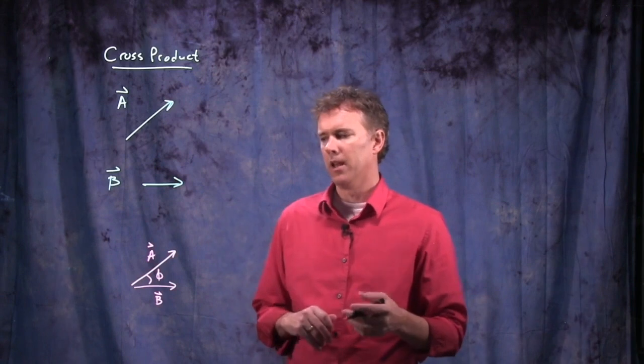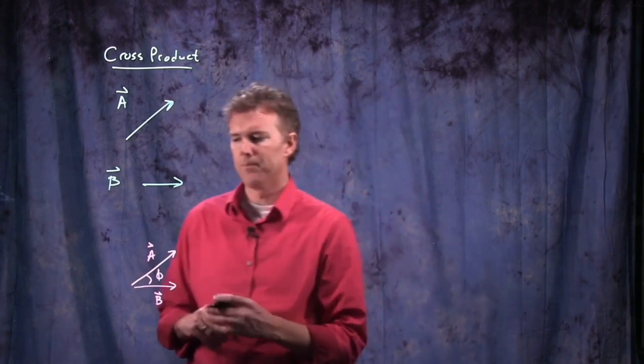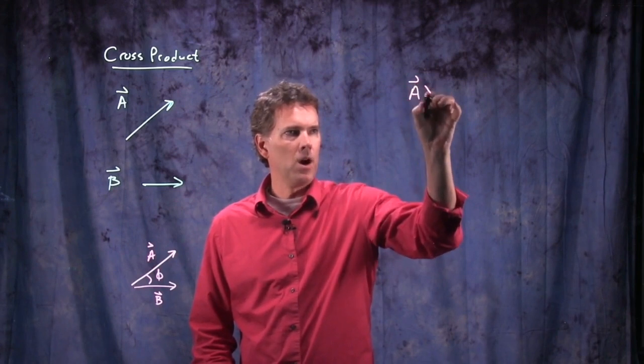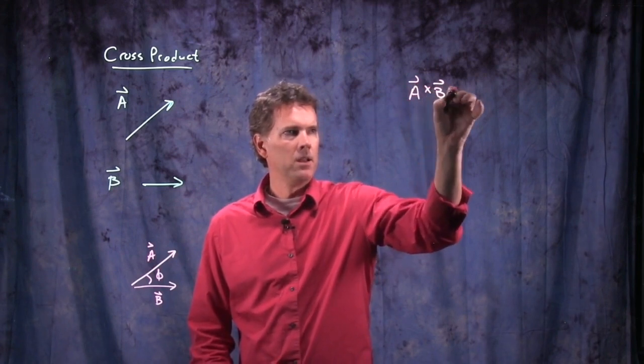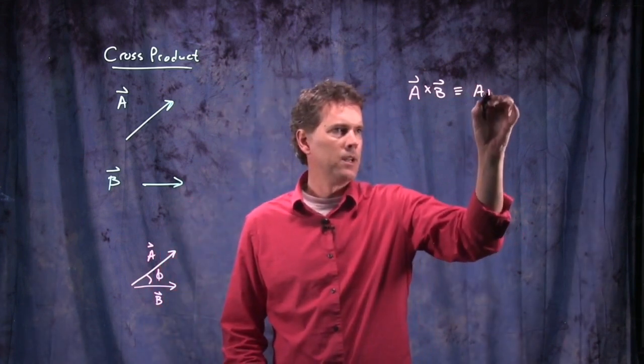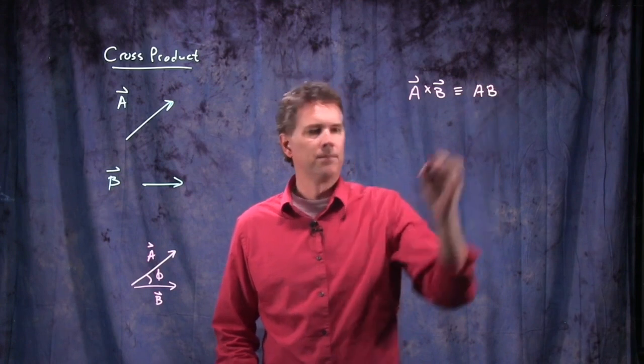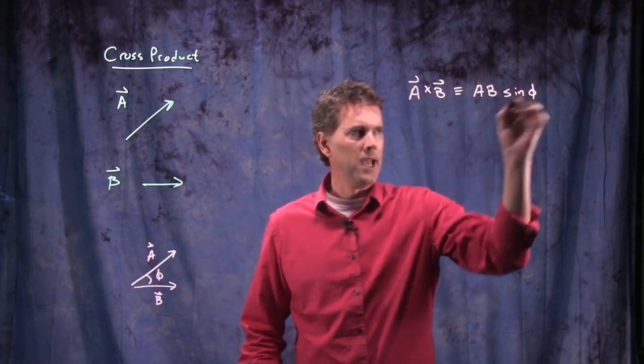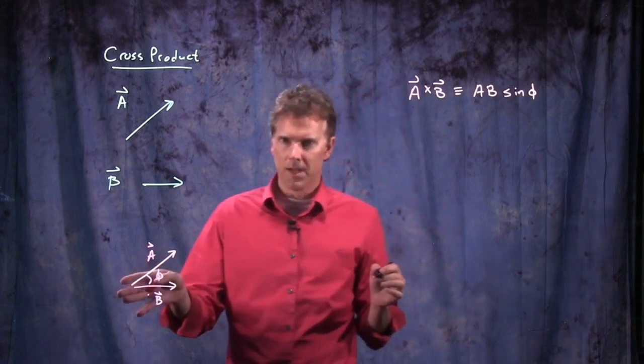Before when we did the dot product, we called it theta, so in this case we'll call it phi. The cross product, A cross B, is defined as the following. It's magnitude of A times magnitude of B times the sine of the angle between them. Remember when we did the dot product we had cosine.